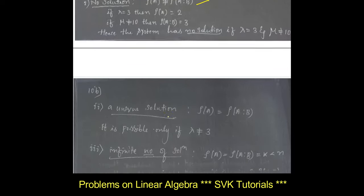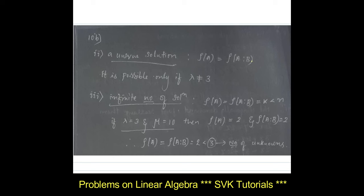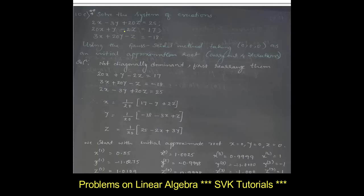For a unique solution, rank(A) equals rank of the augmented matrix, which is only possible if lambda ≠ 3. For infinitely many solutions, rank(A) equals rank of the augmented matrix and that rank k is less than the number of unknowns — this is only possible if lambda = 3 and mu = 10, giving rank(A) = 2 and rank of augmented matrix = 2. Therefore, we get infinitely many solutions.